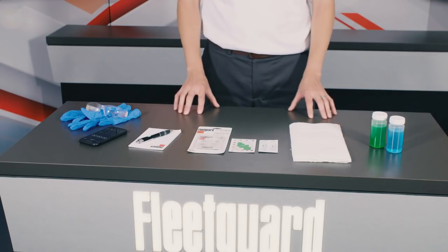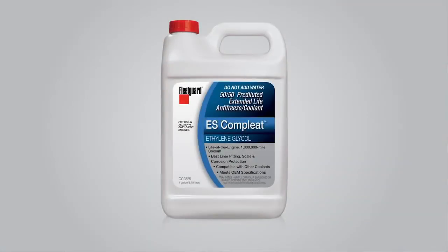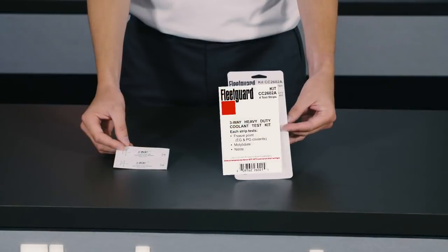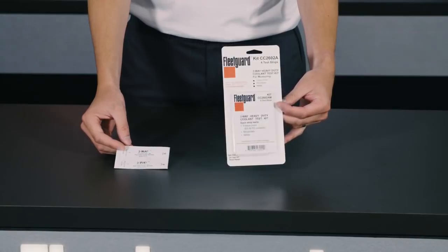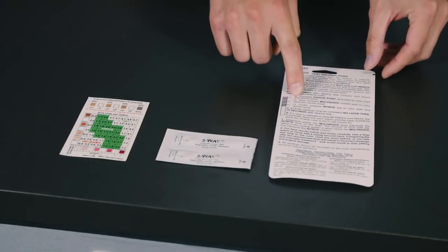For this demonstration I will be testing a sample of FleetGuard ES Complete EG premix or 50/50. Today we're using FleetGuard part number CC2602A which contains individually wrapped three-way test strips along with an instruction card and interpretation chart.